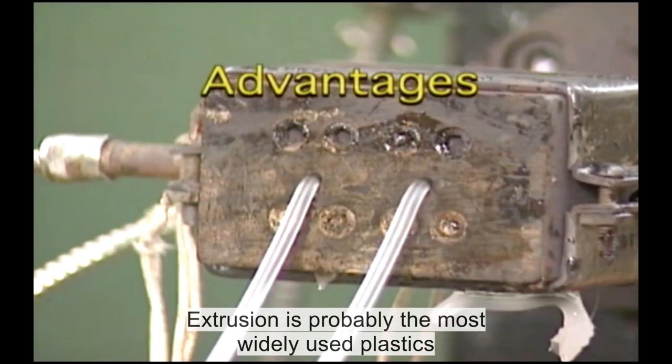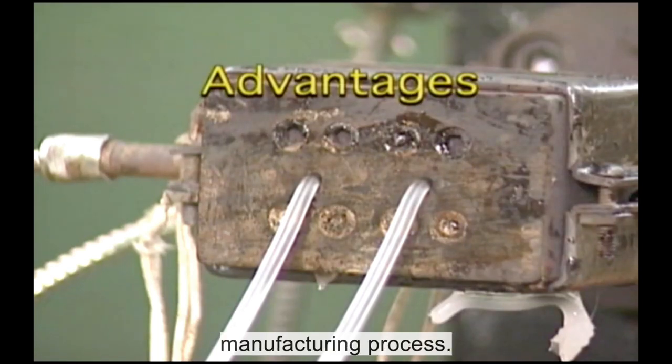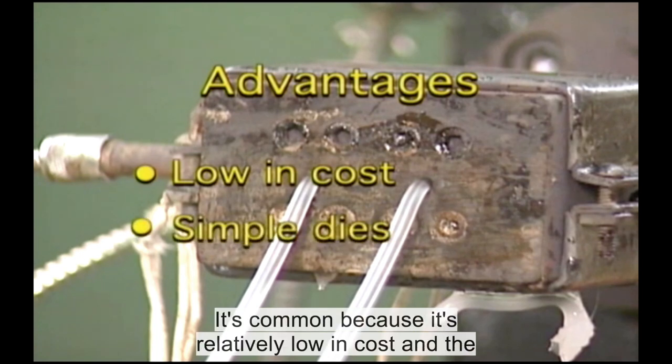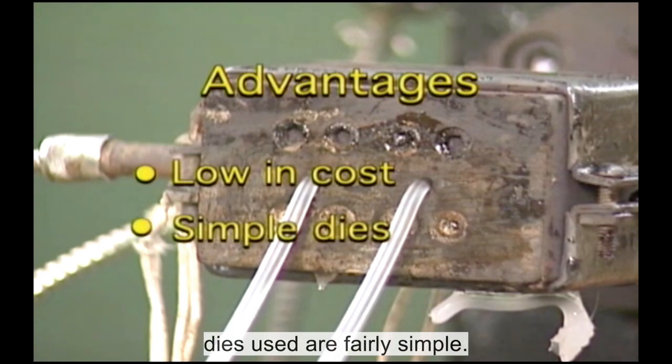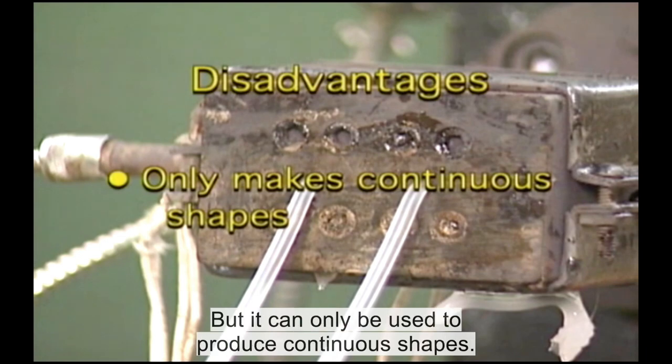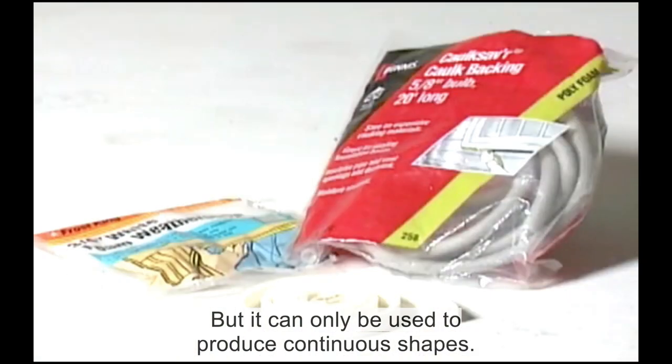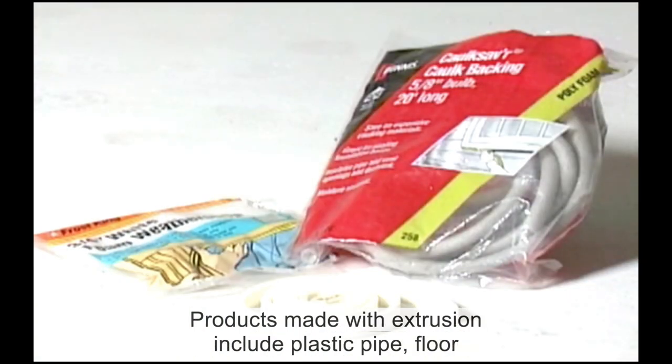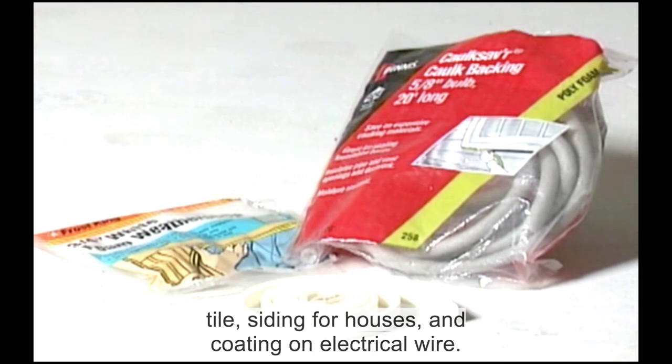Extrusion is probably the most widely used plastics manufacturing process. It's common because it's relatively low in cost and the dies used are fairly simple, but it can only be used to produce continuous shapes. Products made with extrusion include plastic pipe, floor tile, siding for houses and coating on electrical wire.